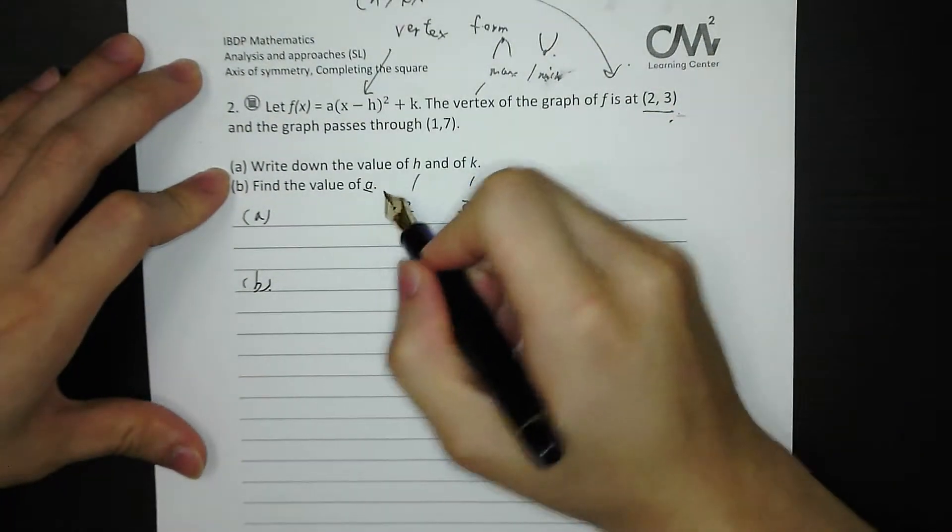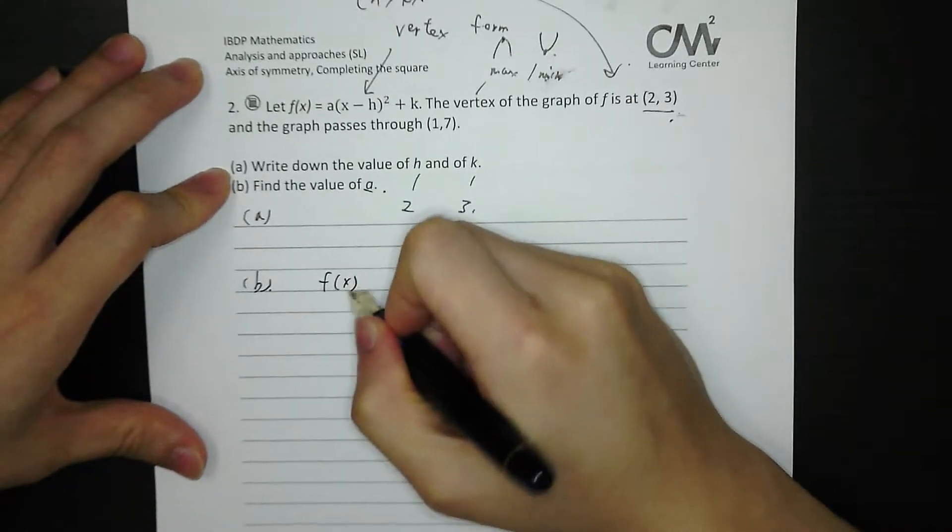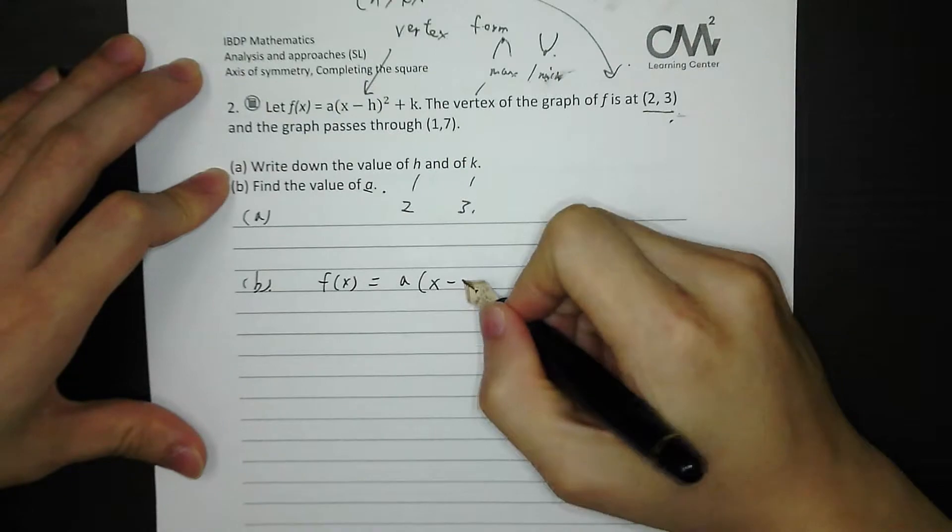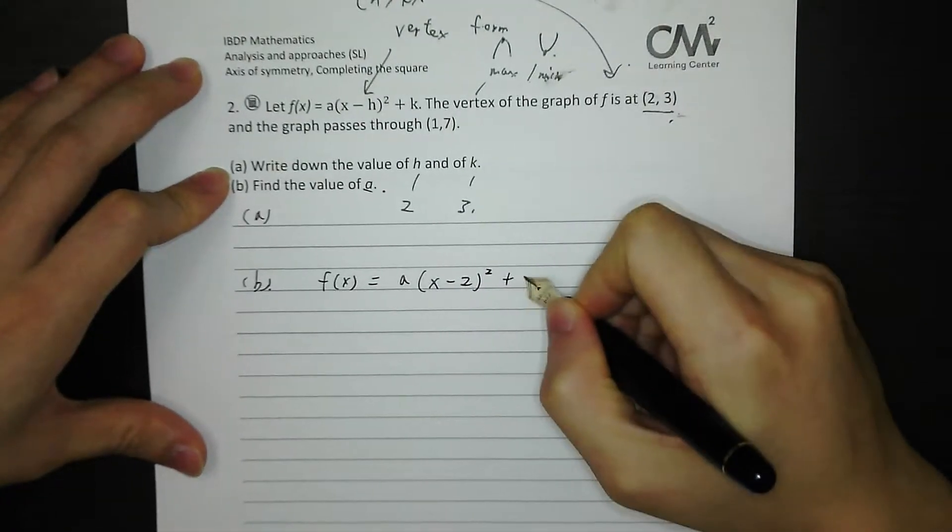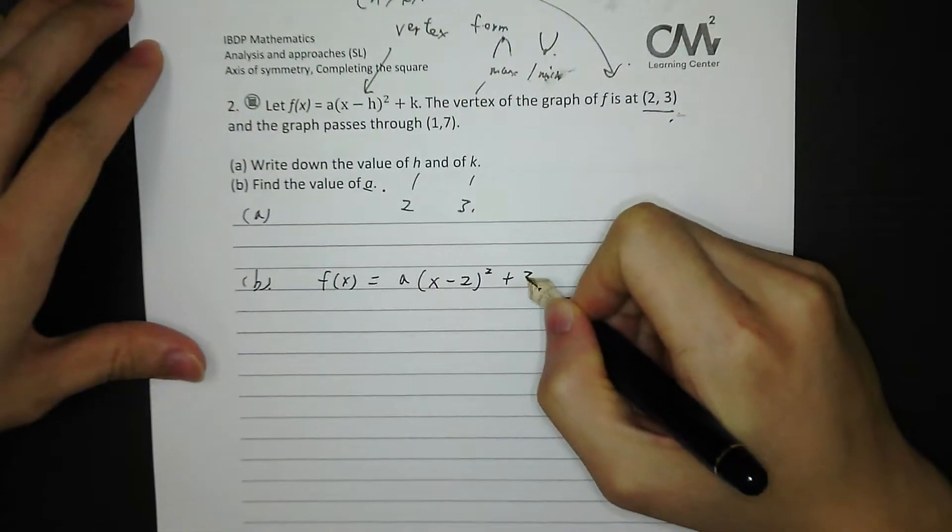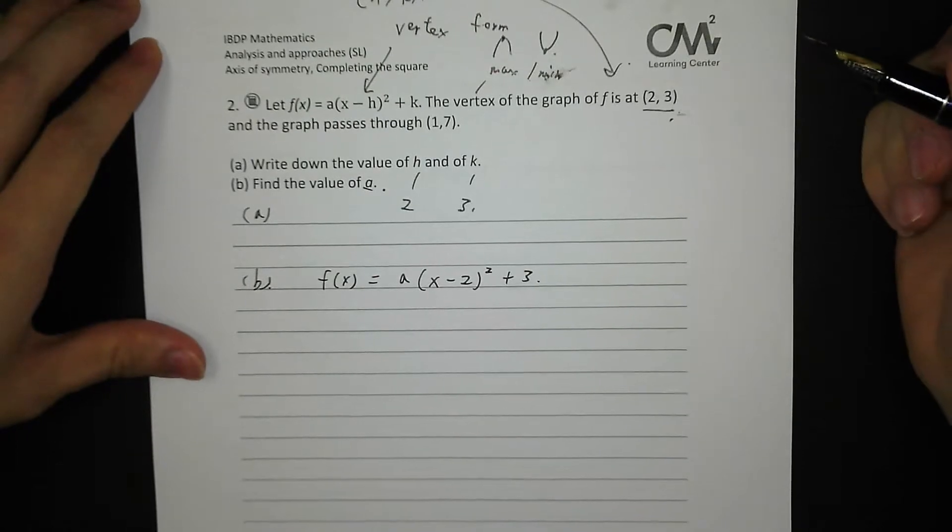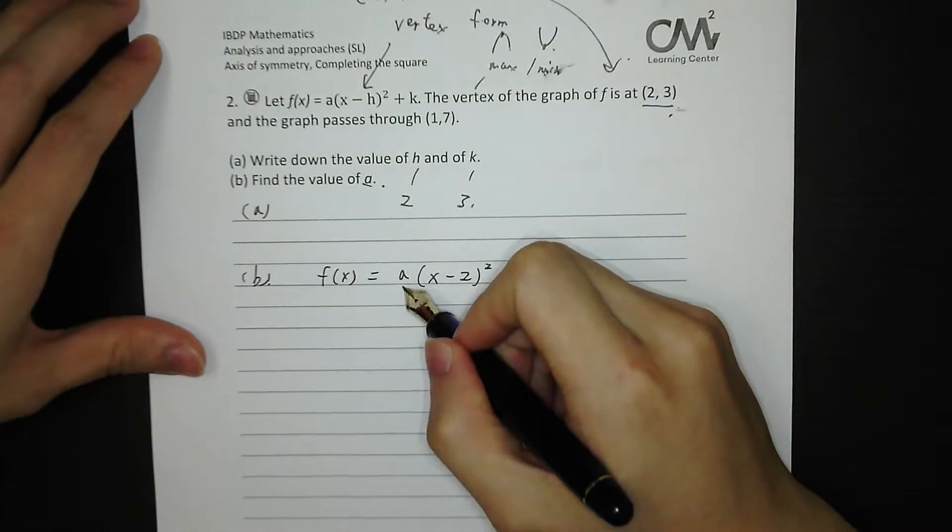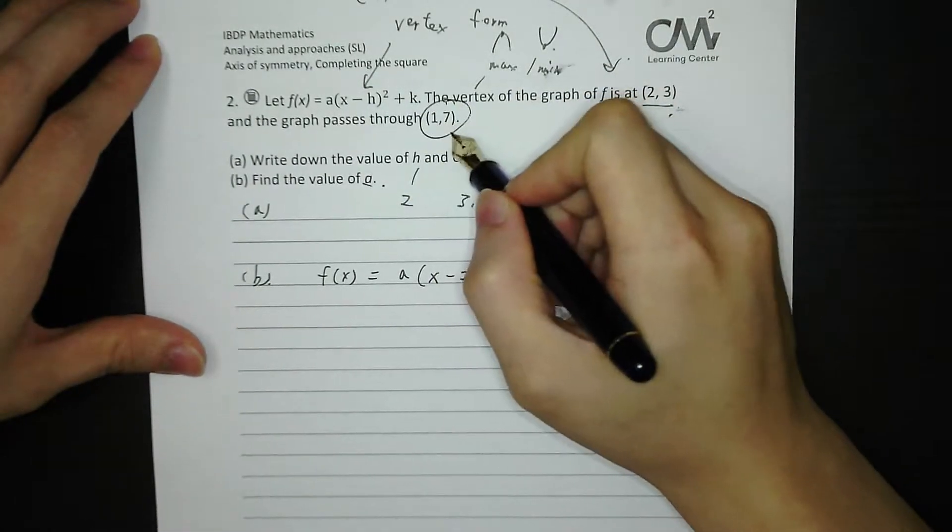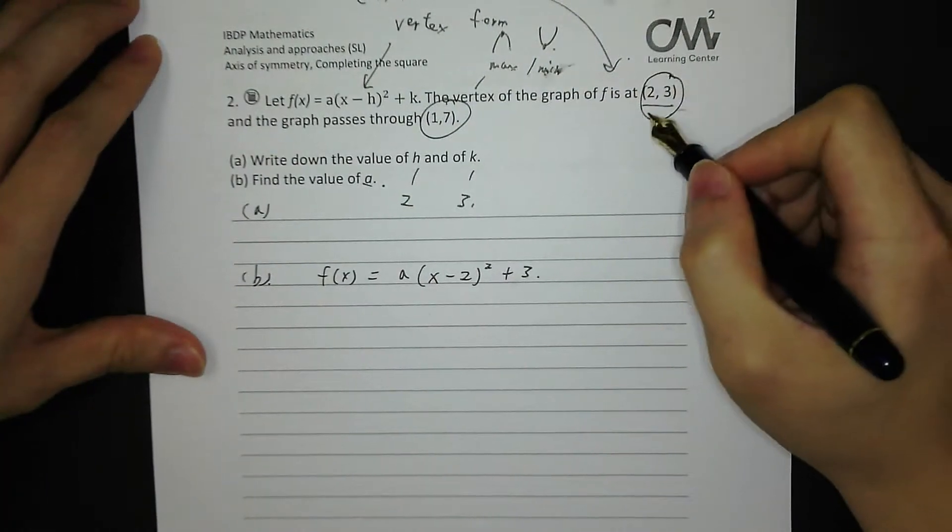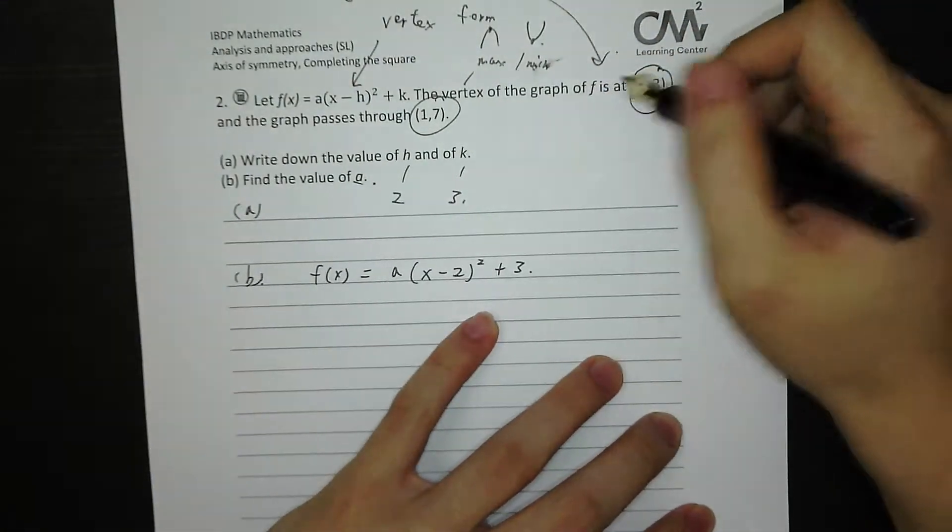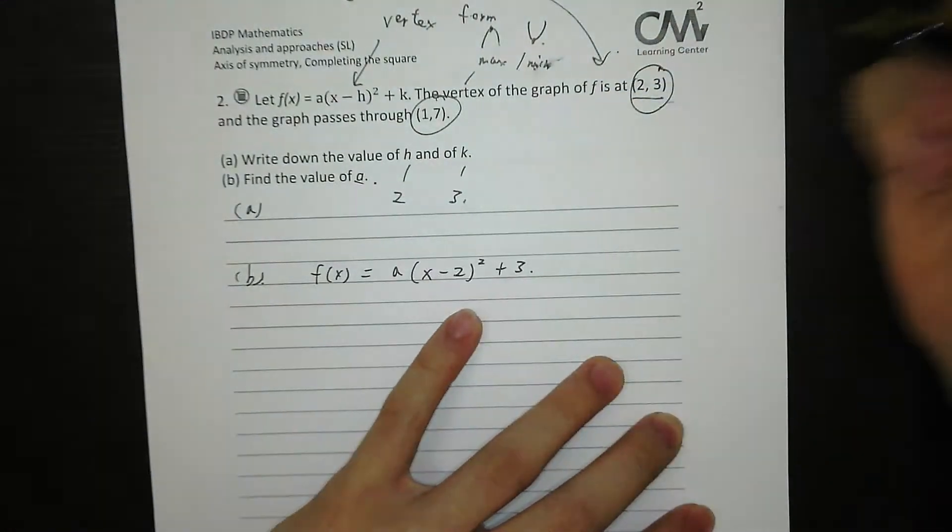Part B, find the value of A. So we know the function equals A(x - 2)² + 3, right? Now there's only one unknown, which is A. But we know two points: 1, 7 and 2, 3. Both points are on the graph, right? So we can substitute either one of the points into the function to solve for A.